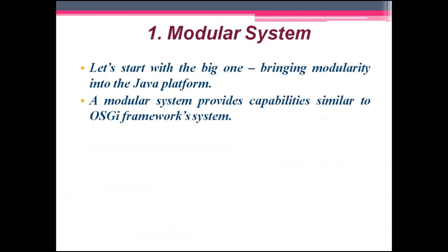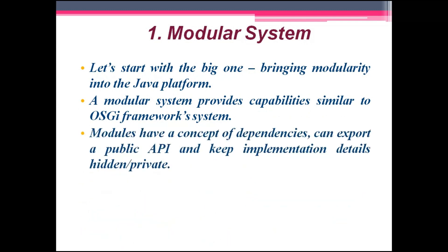Let's start with the first one: the modular system. This brings modularity into the Java platform. A modular system provides capabilities similar to the OSGi framework system. We can break down a big application into individual modules and assemble them later. Modules have a concept of dependency, can export a public API, and keep implementation details hidden or private.